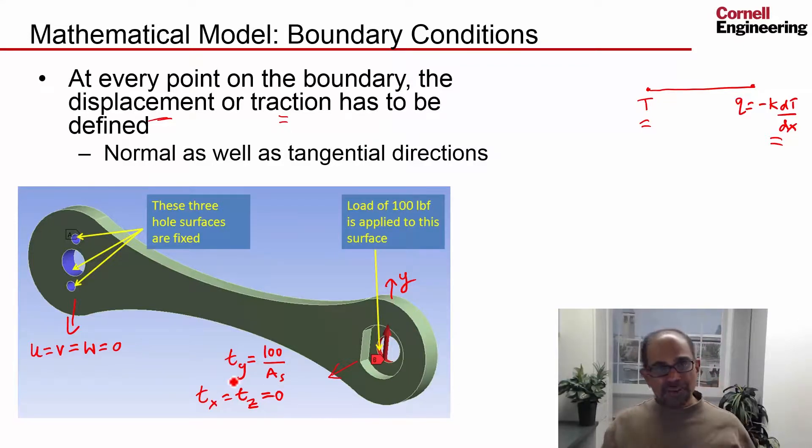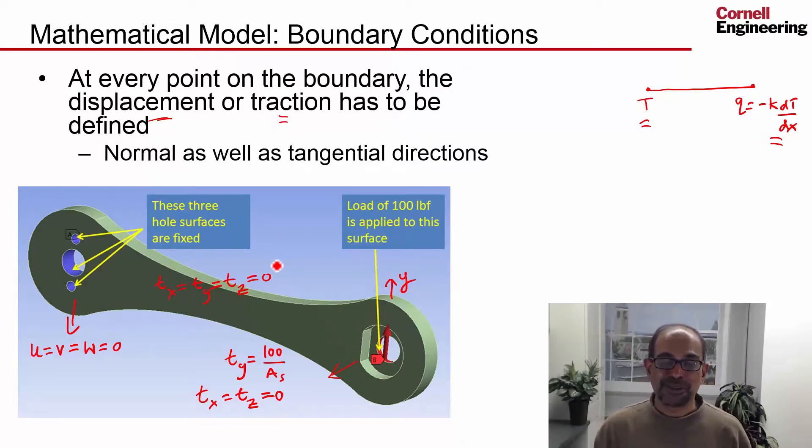At the boundaries where you don't do anything, ANSYS assumes that you have zero traction, so it'll set all three components of the traction to be zero. And again, that's a natural boundary condition—it'll be satisfied only approximately.